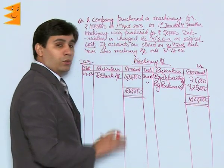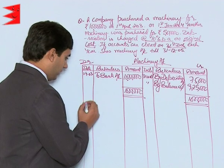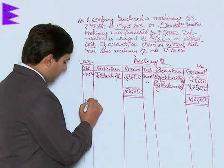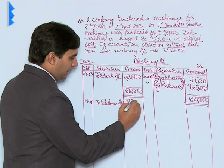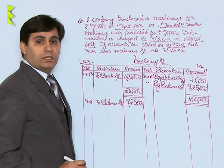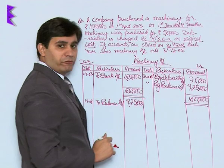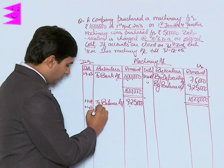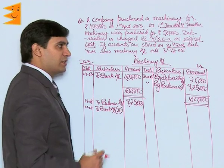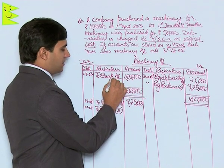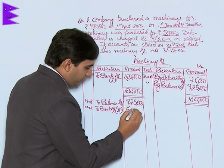The closing balance of 2003 is brought down as the opening balance at the beginning of 2004. So on 1st January 2004, 'To Balance b/d' is rupees 9,25,000. Also on 1st January 2004, another machine was purchased for rupees 5 lakh — recorded as 'To Bank Account (Machine 2)' for rupees 5 lakh.